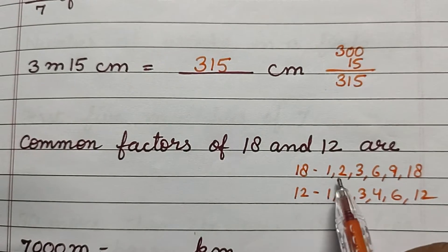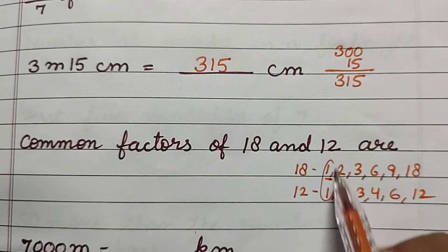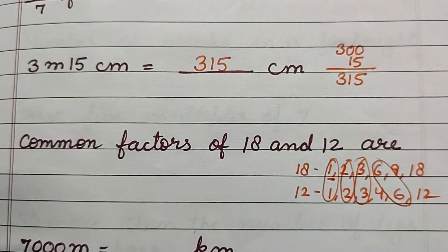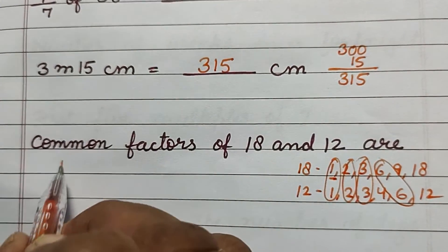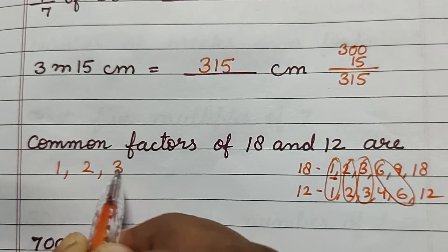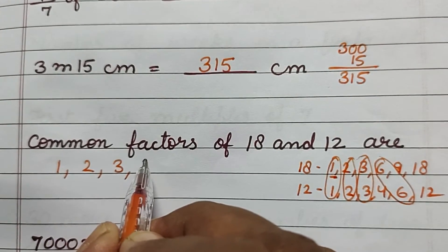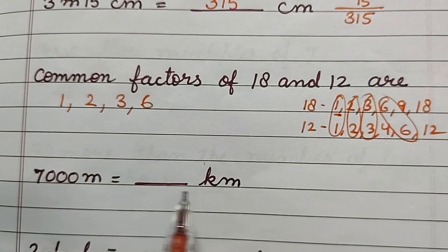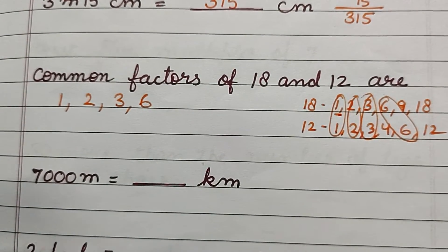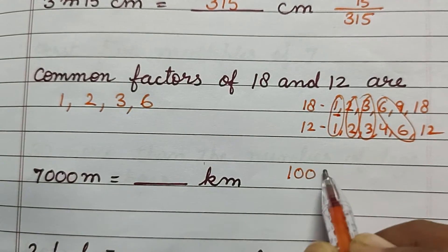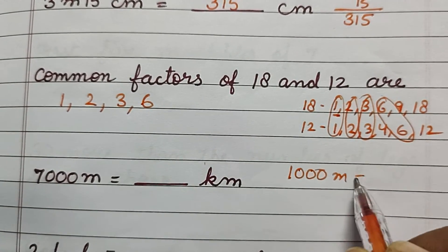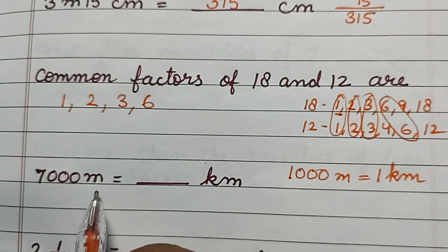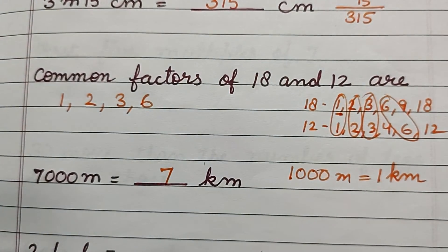Now 7000 meters is equal to how many kilometers? 7000 meters is equal to 7 kilometers. So 7000 meters is equal to 7 kilometers.